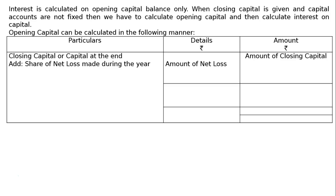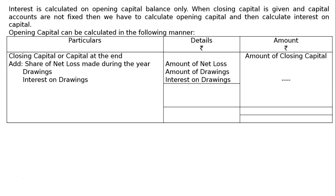First, the share of net loss made during the year — the amount of net loss will be written in the details column. The next one will be drawings — the amount of money withdrawn by the owner from capital — and interest on drawings. These three must have been deducted from opening capital to find out closing capital. Hence, these three will be added back and taken as a single amount in the amount column, added to the closing capital to find out the opening capital.